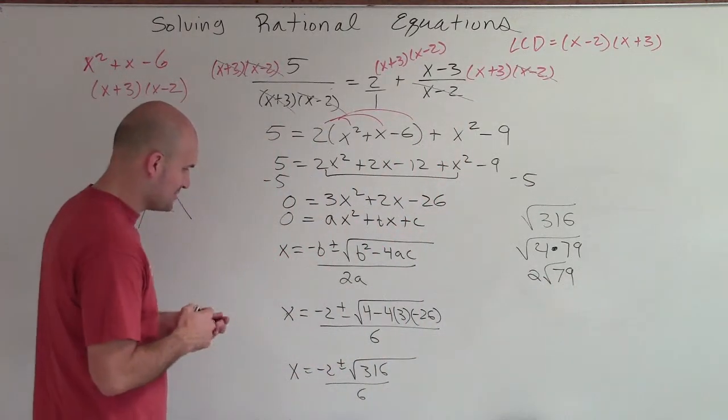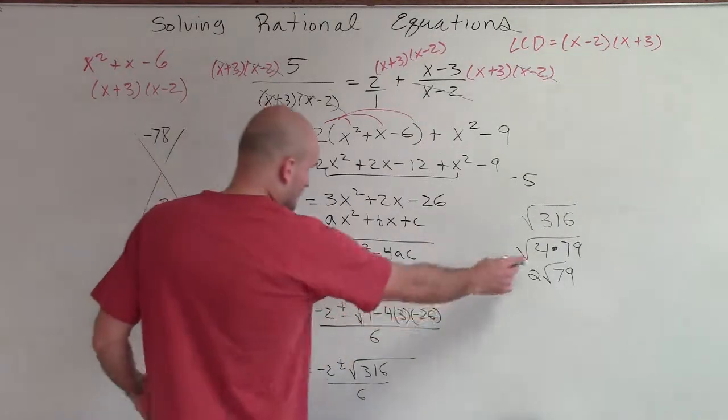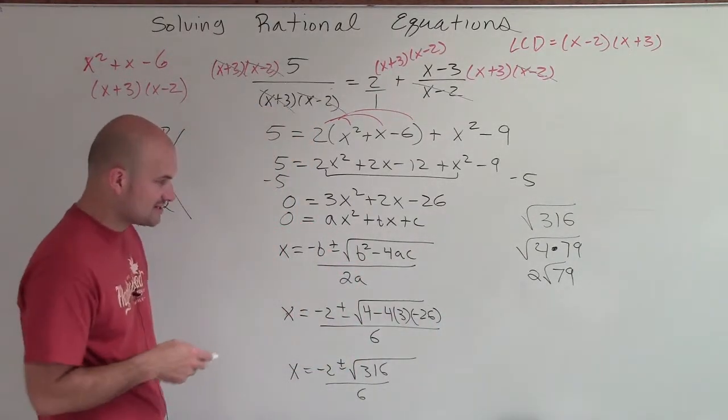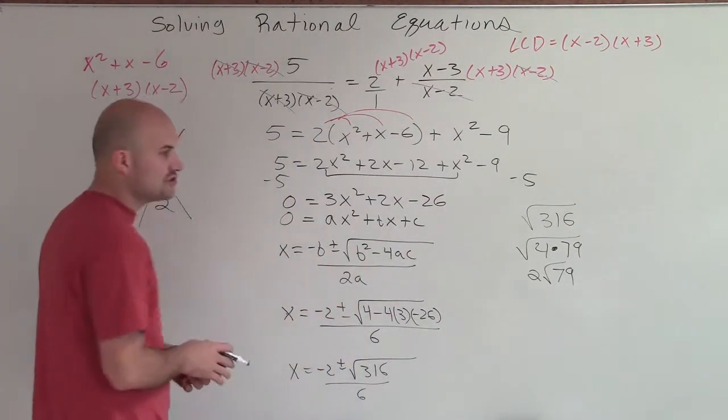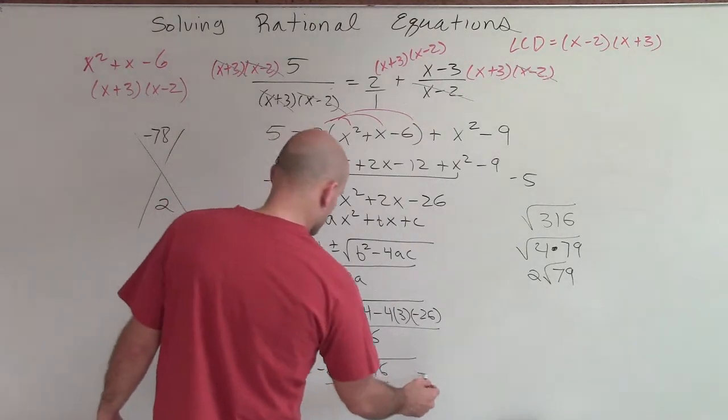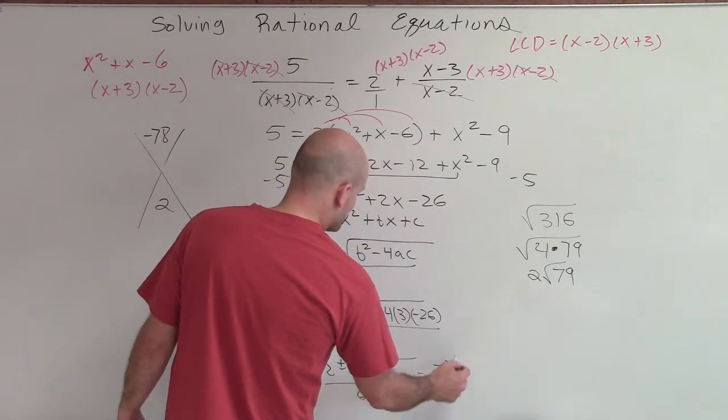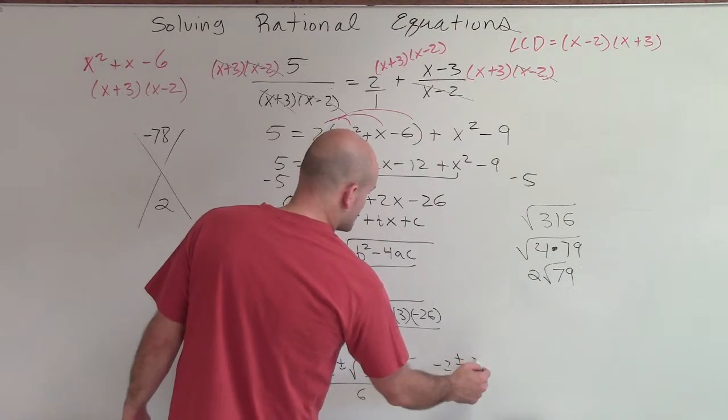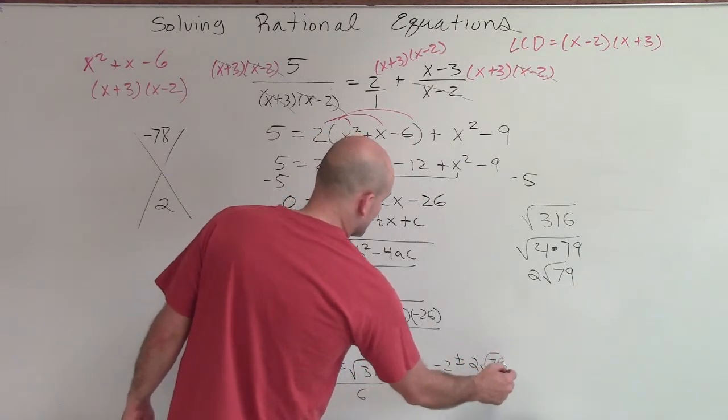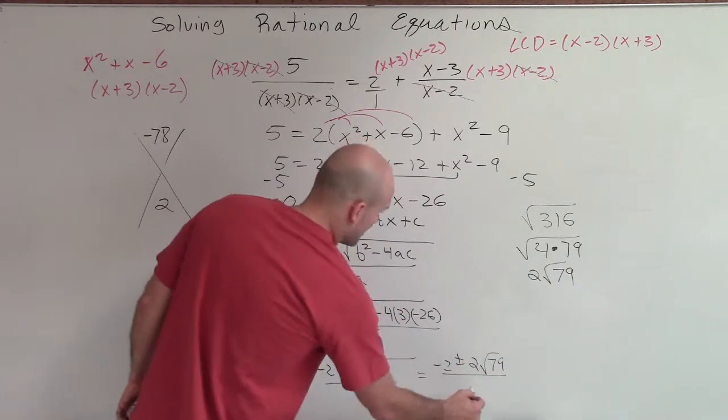So now what I'm going to do is I'm going to rewrite this as instead of square root of 316, I'm going to rewrite it as 2 square root of 79. So I have x is now equal to negative 2 plus or minus 2 square root of 79 divided by 6.